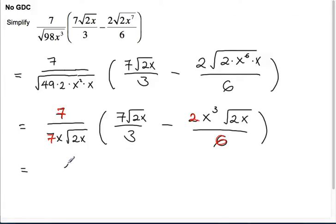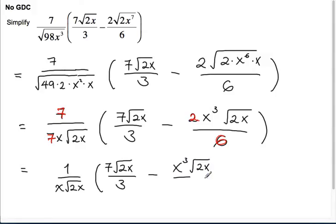No, I think that's it. 7 and 3 are both prime. Nothing will go in there. So the 7's cancel. We're left with root 2x. This one stays completely the same. And 2 over 6 becomes 1 over 3. Now I think we're ready to do some expansion.